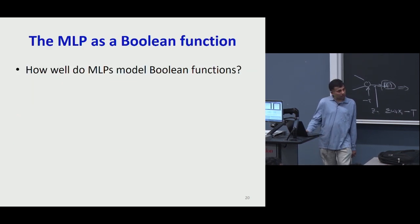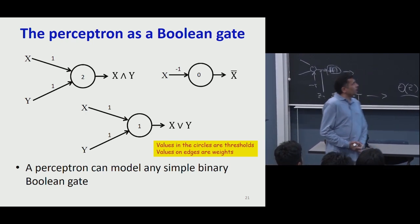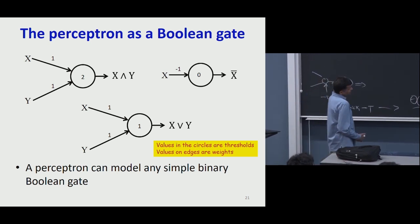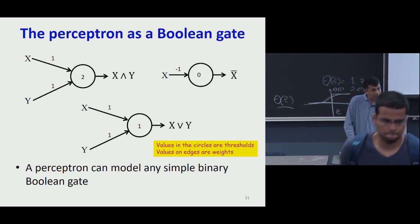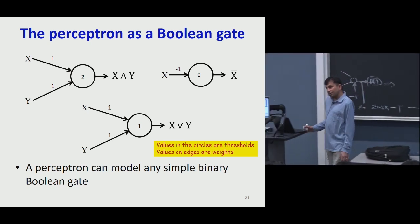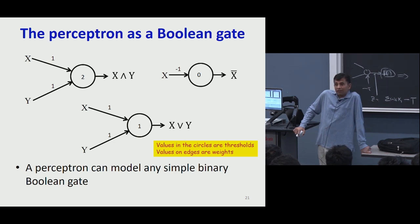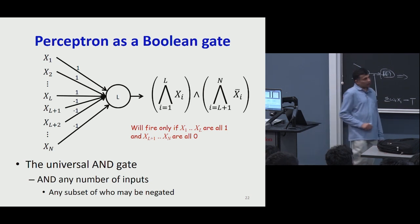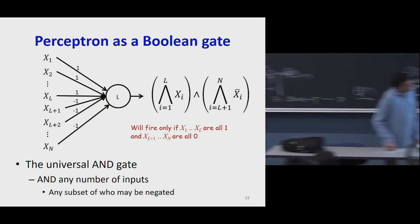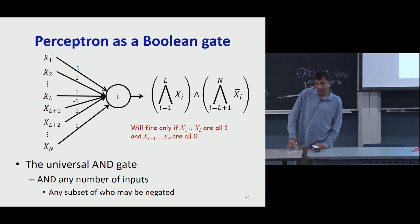We already know that a single perceptron can model any Boolean gate — AND, OR, NOT. These are simple gates, and Rosenblatt thought these things could compute pretty much any function. A threshold function can be a universal AND gate. For example, if I have N inputs, I can say this unit must fire only if inputs 1 through L are 1 and the rest are 0, but not otherwise. Because inputs 1 through L have weight 1 and the remaining inputs have weight minus 1, the only condition under which this fires is if the first L are 1 and the remaining are 0.